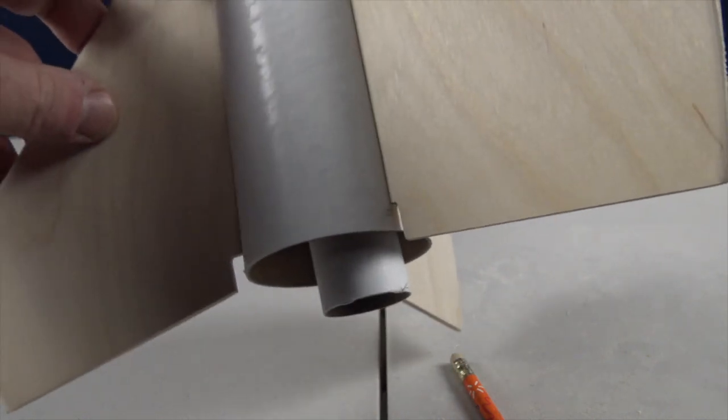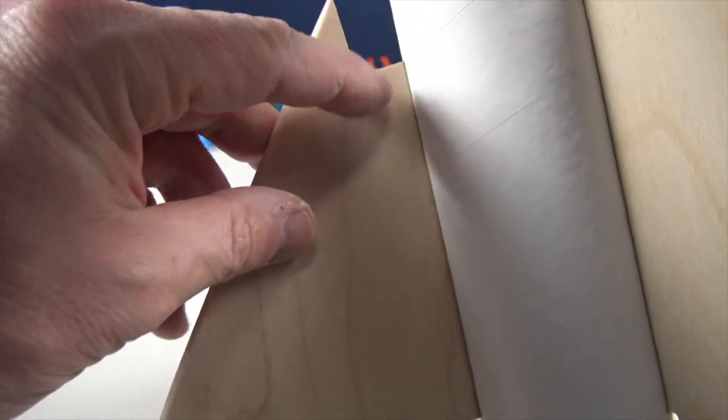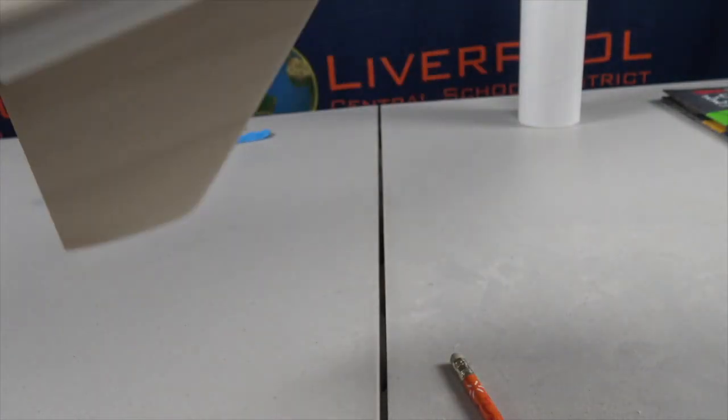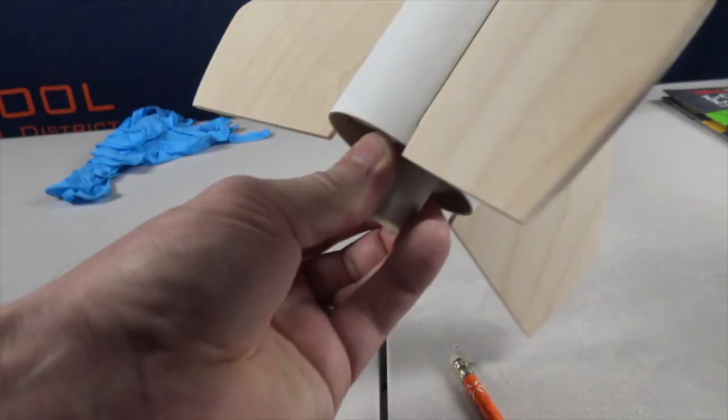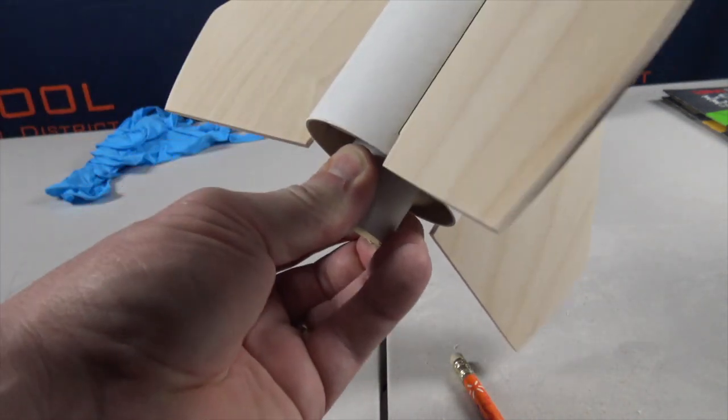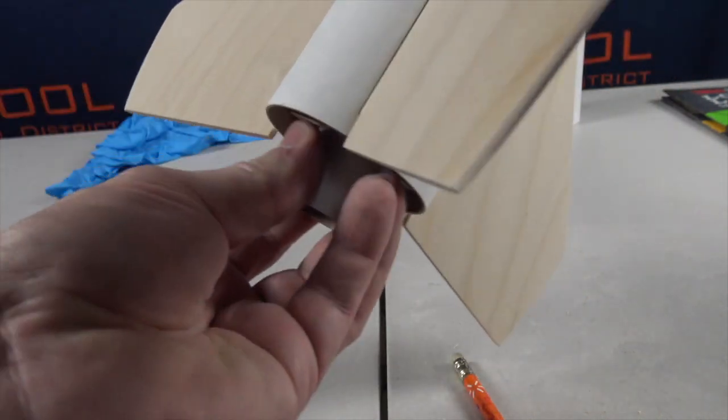So right now that motor mount is going to be resting on top of that tab. If I pull this back, those fins are in there. If I pull this back, that fin is not going to move once it's glued, and neither will that motor mount.